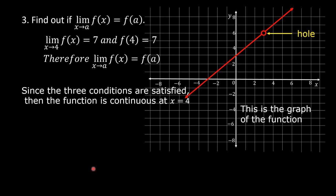This is the graph of the function. There is a hole at x = 3 because the function is discontinuous at x = 3. At x = 4, there is no hole because the function is continuous at x = 4.